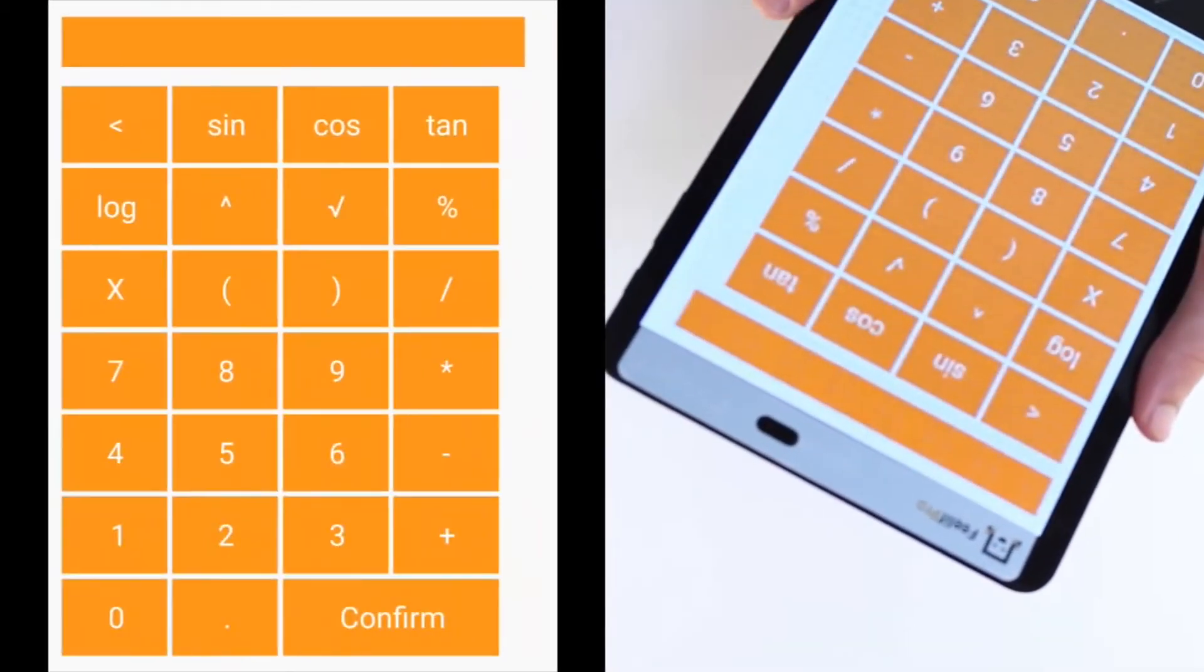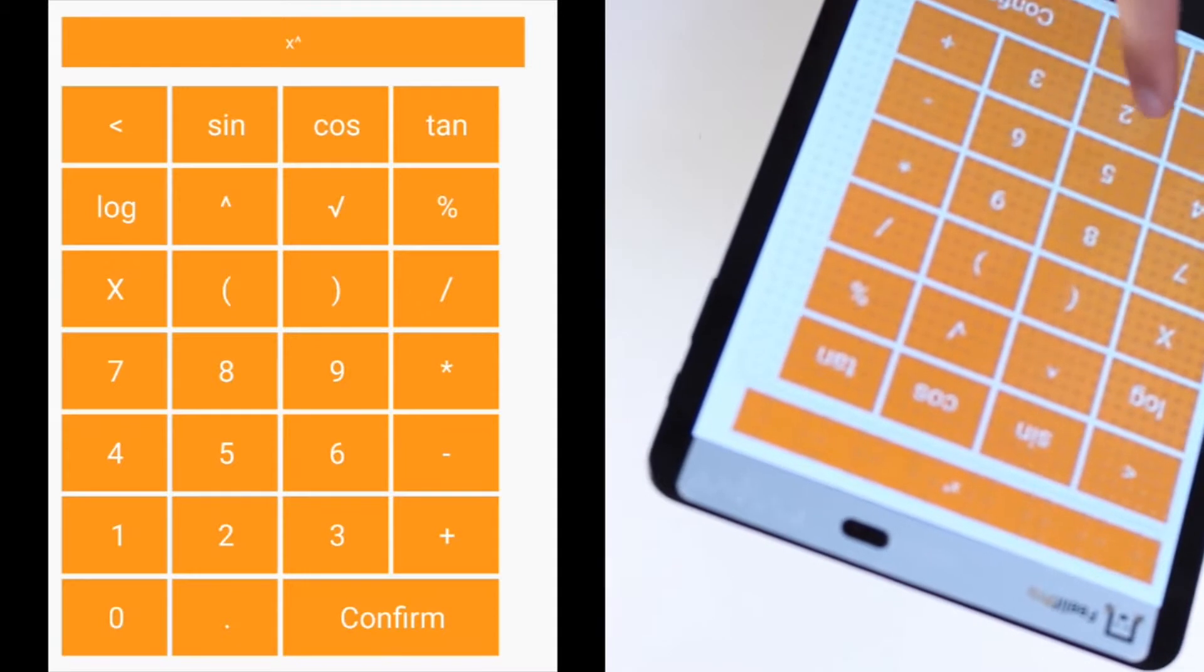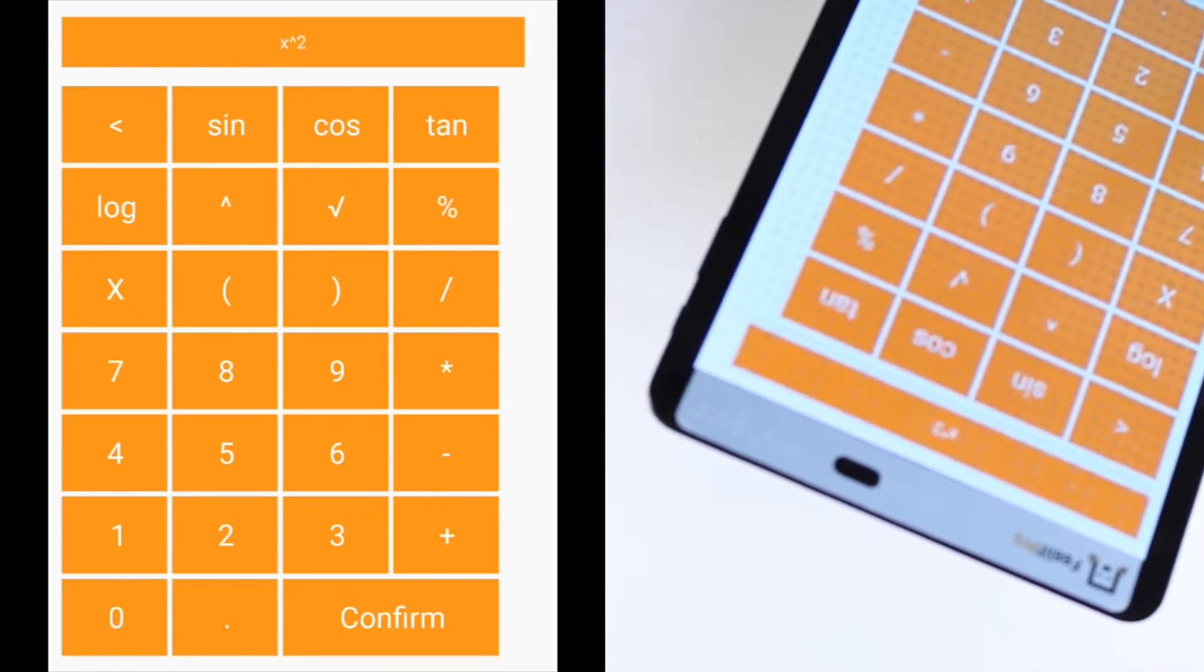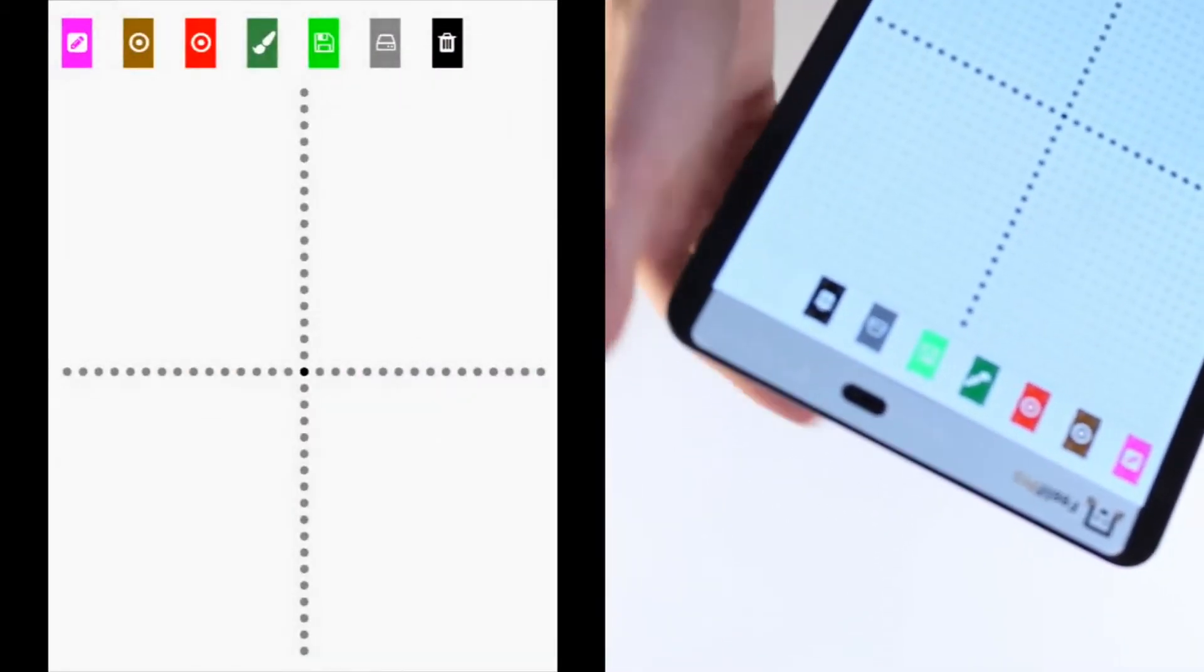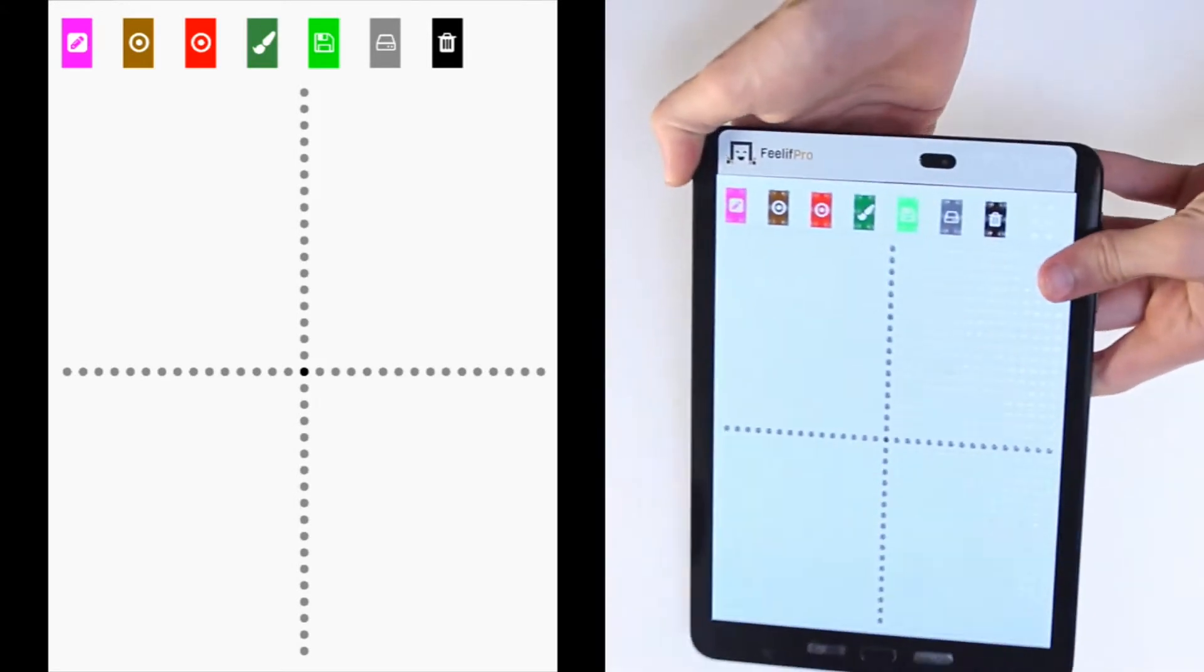To input the function, double tap the first button and insert the function into the scientific calculator. After tapping confirm, the function will be placed onto the coordinate system, but it will not be visible to the user.